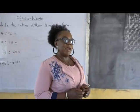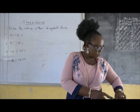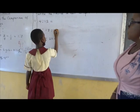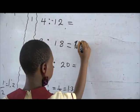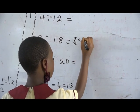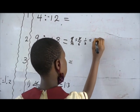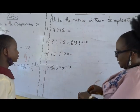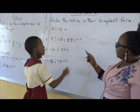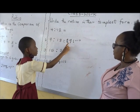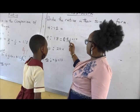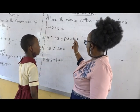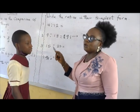Second row, come and do the correction. I want you to tell the whole class how you get one ratio two. Nine over eighteen — you divide by three: three in nine is three, three in eighteen is six, giving three over six. Then divide by three again: three in three is one, three in six is two. We have one ratio two. A round of applause for her.